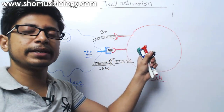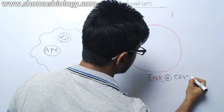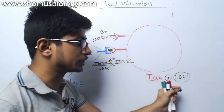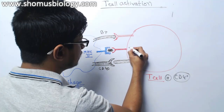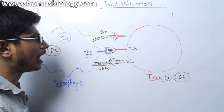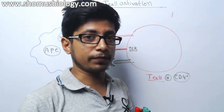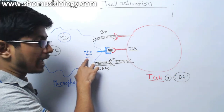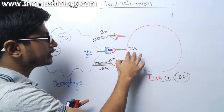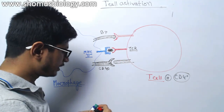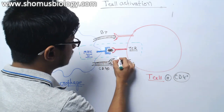T cells have a unique receptor on the surface. This is a T helper cell — a CD4 T cell — so they have a receptor called CD4. They also have another very unique receptor shared by all T cells, known as the T cell receptor, or TCR. These are the two most important receptors that engage in the process of T cell activation. MHC class 2 interacts with the T cell receptor, and this is the most important thing for this T cell activation process.